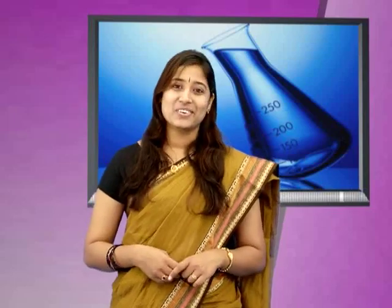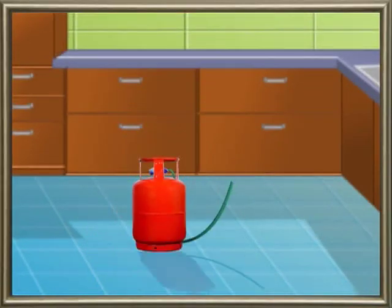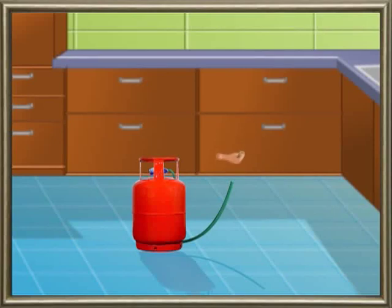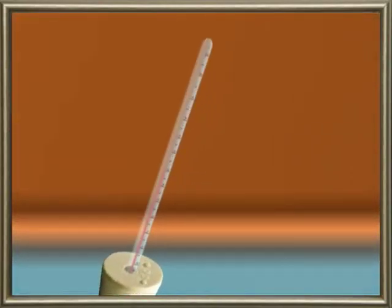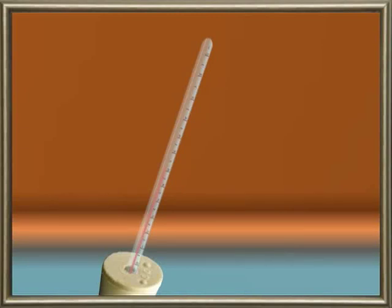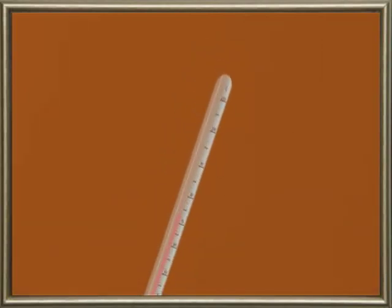Let us see how. Insert a thermometer into a gas cylinder in such a way that the bulb of the thermometer is in contact with the gas. The mercury of the thermometer may increase or decrease and then become steady after some time. This steady value of the mercury level shows the temperature of the gas. It is expressed in degree Celsius or Kelvin.